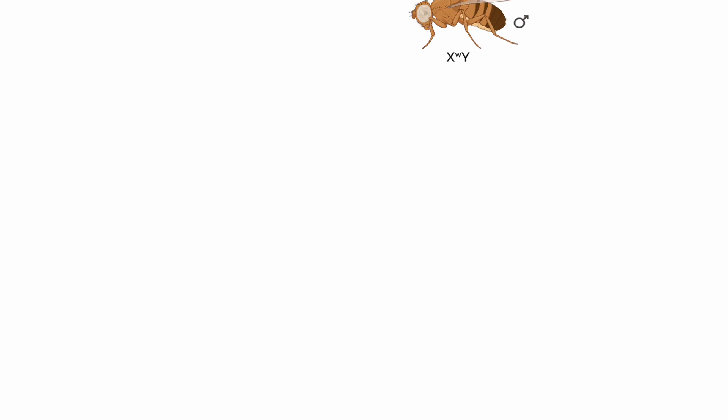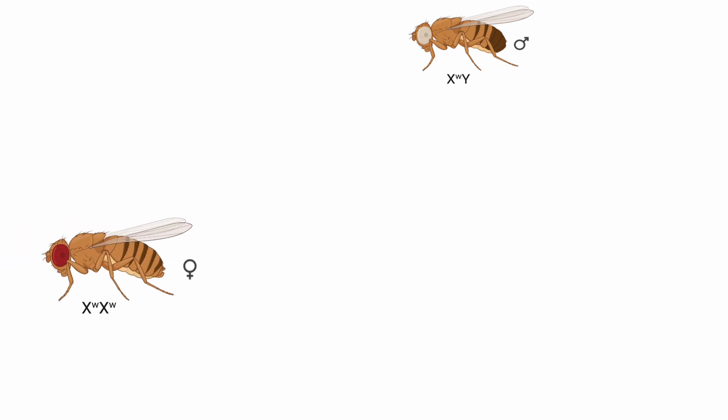Let's dive into the world of fruit flies and genetics. This image shows a reciprocal cross in Drosophila, a common experiment to study sex-linked traits. In the first cross, we have a white-eyed male, X^w Y, and a red-eyed female, X^W X^W.